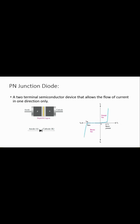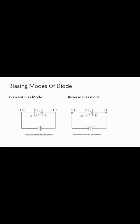Step one when analyzing a circuit involving a diode is to determine the bias mode. Forward bias mode is when the positive terminal of the battery is connected to the positive side of the diode. Reverse bias mode is when the negative terminal of the battery is connected to the anode side.